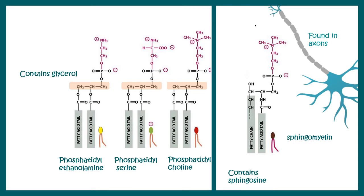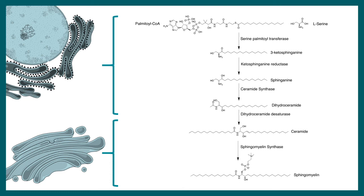Now let us talk about how sphingolipids are synthesized. Sphingolipids are synthesized from palmitoyl-CoA and L-serine, and the enzyme serine palmitoyltransferase is the key commitment enzyme in this pathway. Ultimately it forms 3-ketosphingosine and leads to the formation of ceramides.